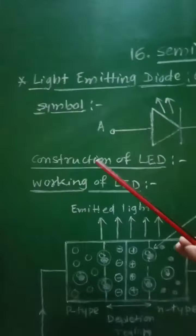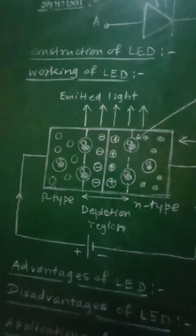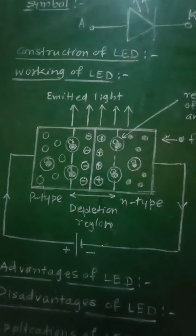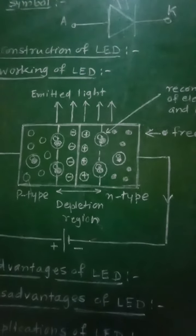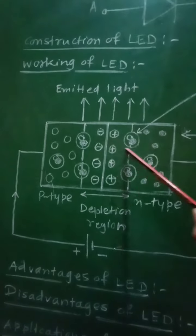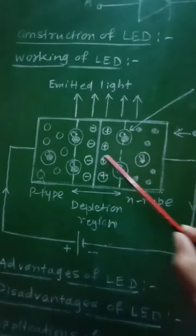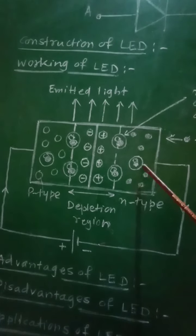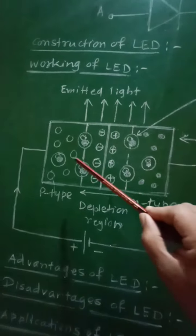Regarding the construction of the LED, the N-region is heavily doped as compared with the P-region of the PN junction diode. In the block diagram, the P-type region and N-type region are shown, and the N-region is heavily doped compared to the P-region.